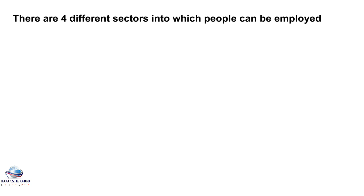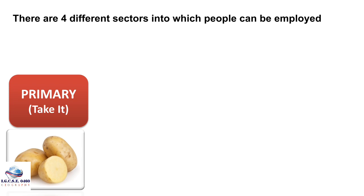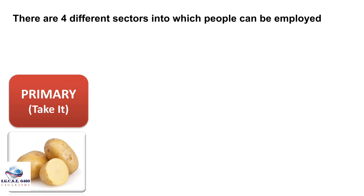There are four different sectors in which people can be employed. Number one is the primary sector, which you remember as 'take it.' This involves taking raw materials from the ground or from their natural existence — for example, growing crops, cutting wood, catching fish. Activities here include agriculture, mining, fishing, and lumbering. People could be employed as farmers, miners, and fishermen.